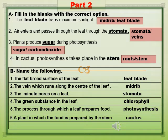By the help of explanation, fill in the blanks with the correct option. Number 1: The leaf blade traps maximum sunlight. Air enters and passes through the leaf through the stomata. Plants produce sugar during photosynthesis. In cactus, photosynthesis takes place in the stem.